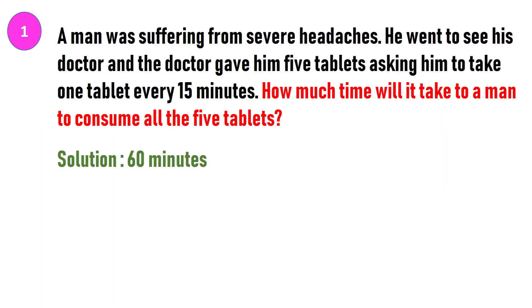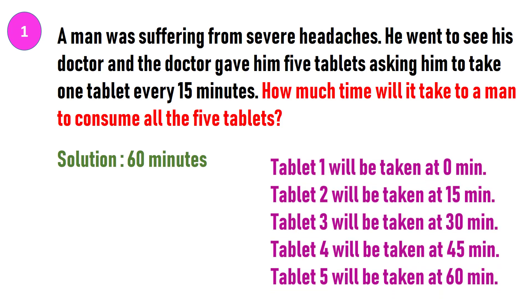Most of the people gives the answer to the puzzle as one hour 15 minutes, but it's not correct. A man will be able to consume all the five tablets in an hour that is 60 minutes. Tablet one will be taken at 0 minute. Tablet two will be taken at 15 minute. Tablet three will be taken at 30 minute. Tablet four will be taken at 45 minute and tablet five will be taken at 60 minute. Hence total time taken is 60 minutes.